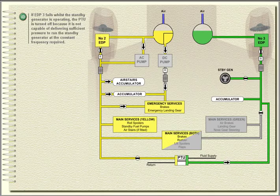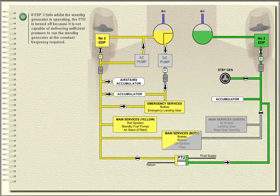If EDP3 fails whilst the standby generator is operating, the PTU is turned off because it is not capable of delivering sufficient pressure to run the standby generator at the constant frequency required.